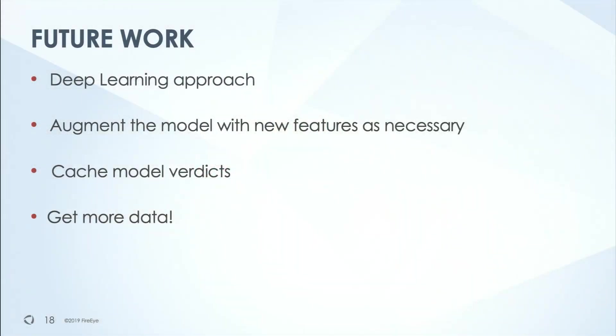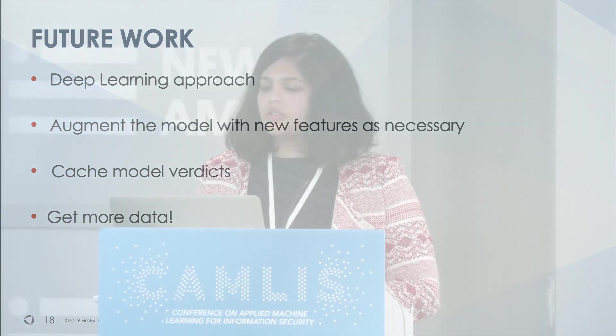Some thoughts for future work. I initially started off with LSTMs and deep learning models for the problem to do away with hand-engineered features, but my model was overfitting to the data I had, and I didn't have the time or bandwidth to go too deep into it back then — but I'd like to go back and see how that does. There have also been suggestions to augment the current features with domain age features, like newly registered or newly occurring domains. I also have thoughts about caching the model verdict so we don't crawl all URLs that look similar to URLs that already have a verdict. And finally, maybe targeting more data.